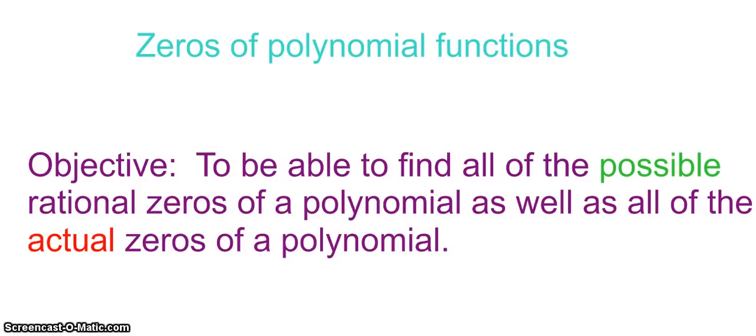Alright, so now we're going to do more with zeros of polynomial functions. We've done all of this before - we've found real zeros and non-real zeros, focusing mainly on the real zeros. So what we're going to do here is nothing new. The only thing new we're going to learn, which you've done before, is the possible rational zeros of a polynomial.